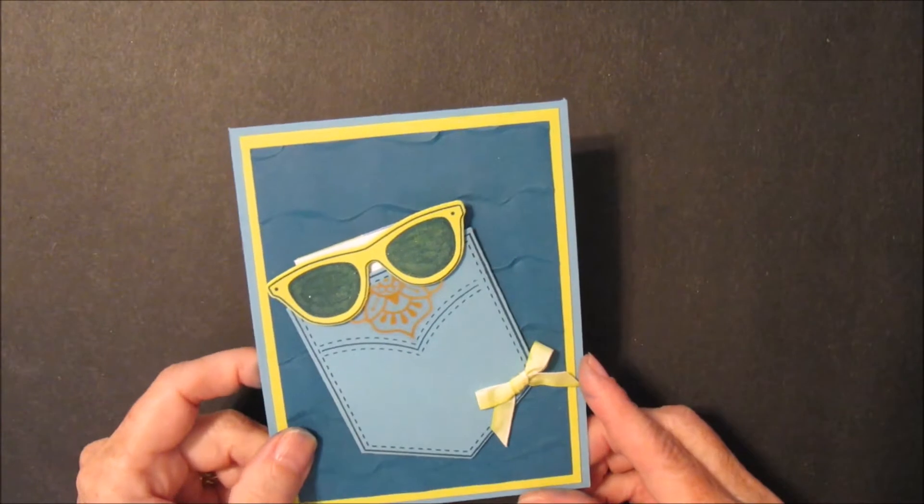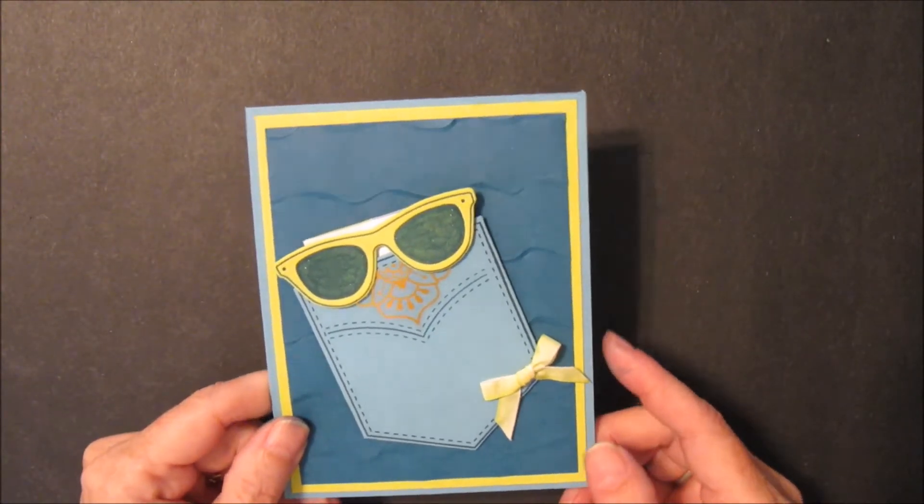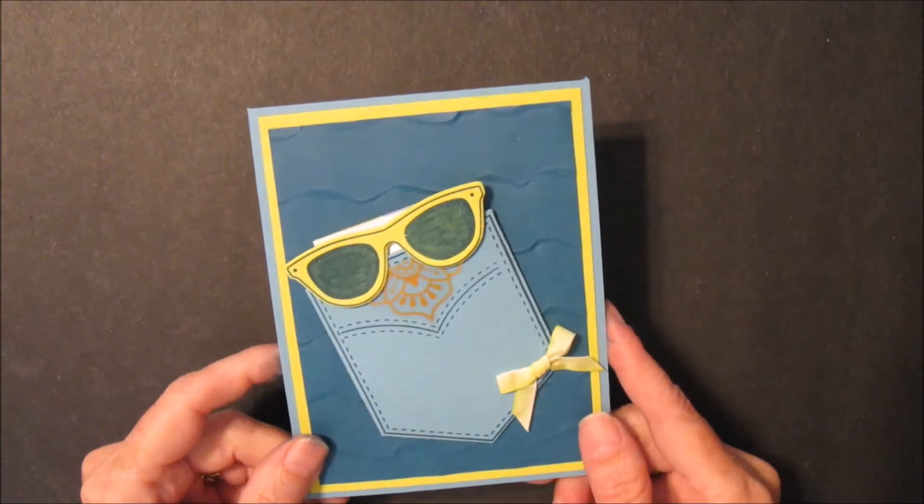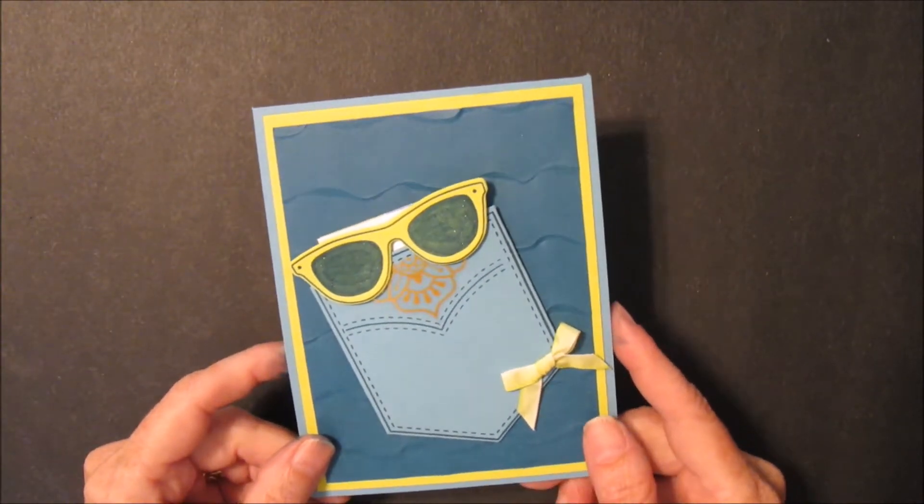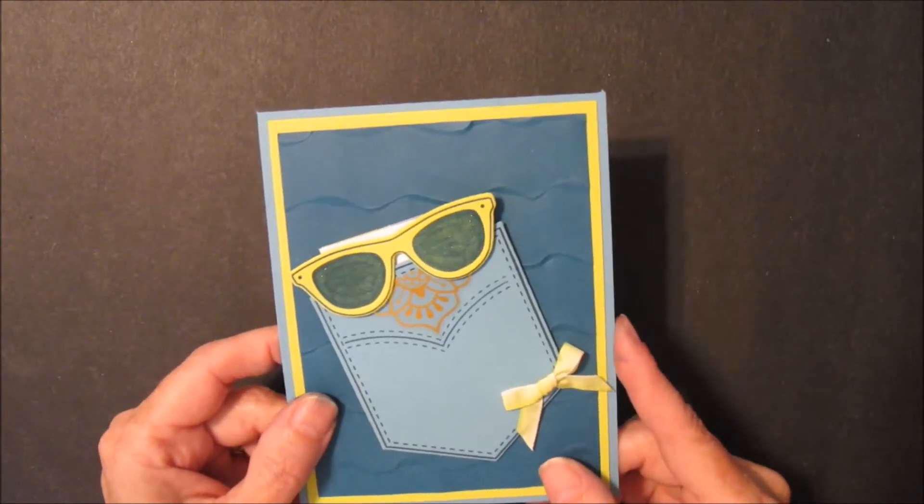Hi, it's Kathy with another episode of Fast and Fabulous on Friday. Today I'm going to show you how to make this cute little card with the Pocket Full of Sunshine stamp set, which is new in the annual catalog.